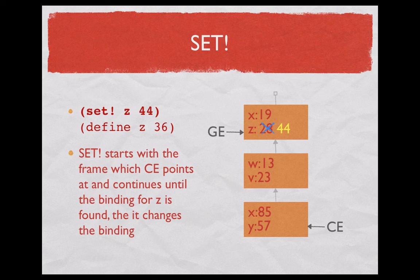So the current environment is down there. And what we want to do is to change the value of z to 44. We start from the current environment or the current frame that the current environment is pointing at. And we look for z. Finally we find it in the third frame up there. And consequently we change that value to 44.